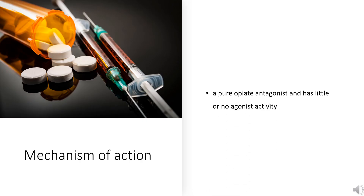Mechanism of Action. Naltrexone is a pure opiate antagonist and has little or no agonist activity. The mechanism of action of naltrexone in alcoholism is not fully understood; however, involvement of the endogenous opioid system is suggested by preclinical data. Naltrexone is thought to act as a competitive antagonist at mu, kappa, and delta receptors in the CNS, with the highest affinity for the mu receptor.